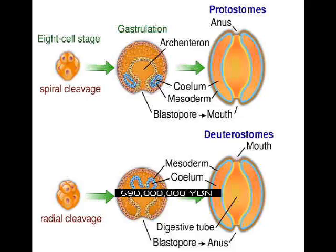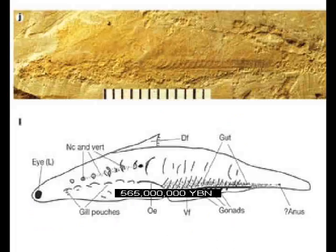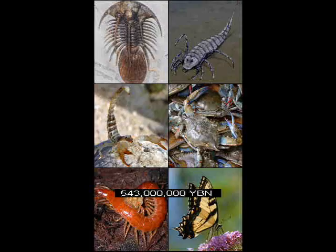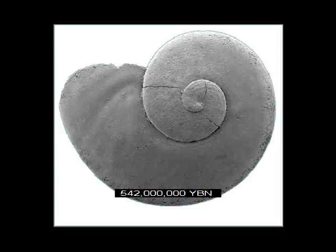Protostomes — ancestor of all arthropods, brachiopods, and mollusks. Deuterostomes — ancestor of acorn worms, starfish, and all chordates. Chordates — ancestor of all tunicates, fish, amphibians, reptiles, mammals, and birds. Tunicates. First fish. Arthropods — insects, crustaceans. First shell or skeleton. Mollusks. Heart. Segmentation. Vertebrates — ancestor of most fish and all amphibians, reptiles, mammals, and birds.